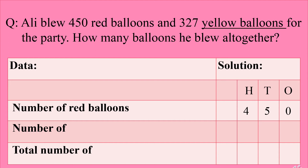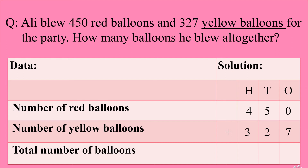For the second line, see the number 327 — what is written in front of 327? Yes, that is yellow balloons. So the data for the second line will be 'number of yellow balloons,' and in front of it you have to write 327, with a sign of addition. What are they asking? How many balloons did he blow altogether?